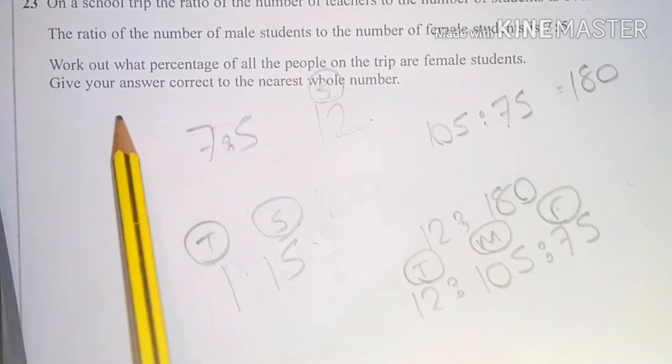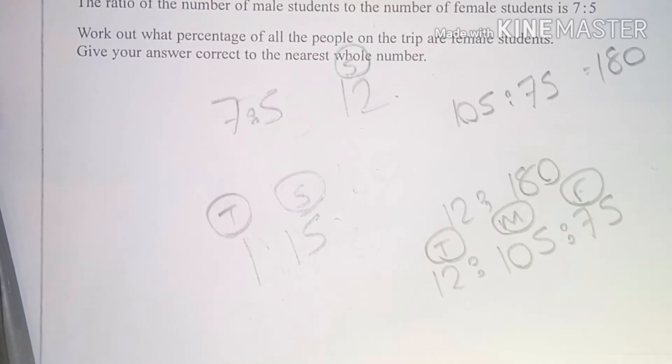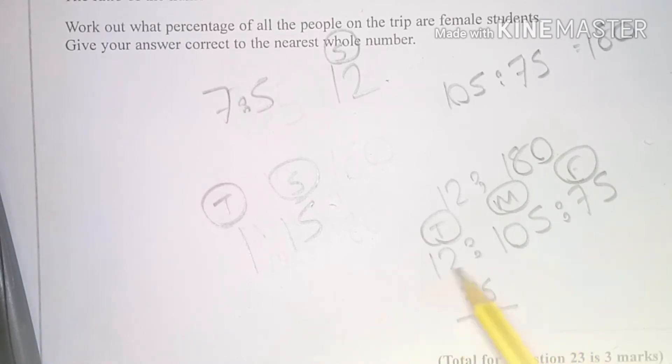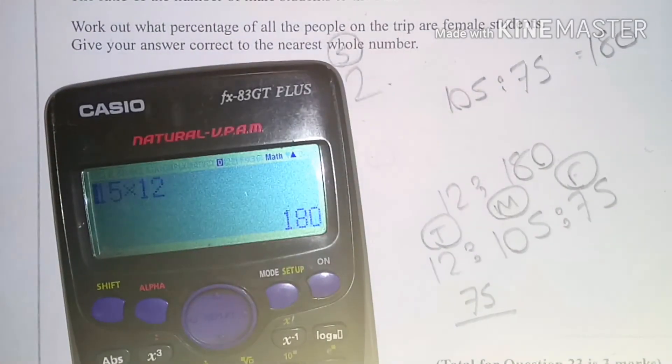Now the question is, what percentage of people are female students? That's easy if I change this to a fraction first. So I know there's 75 out of a possible, I'll need to add all of these up, which is 75 plus 105 plus 12, which is 192. Now I need to change this to a percentage.